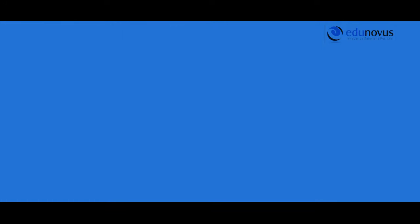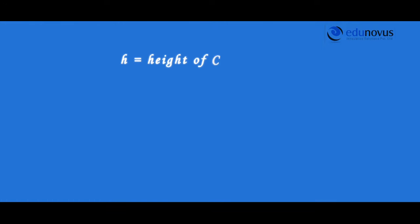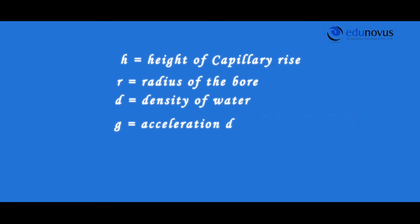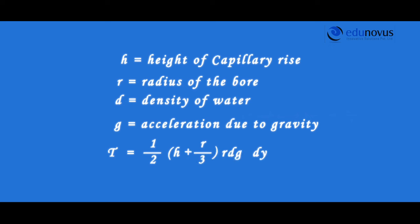Knowing the values of h (height of the capillary rise), r (radius of the bore), d (density of the water), and g (acceleration due to gravity), the surface tension of water T is given by: T = (1/2) × (h + r/3) × r × d × g, and its units are dynes per centimeter.